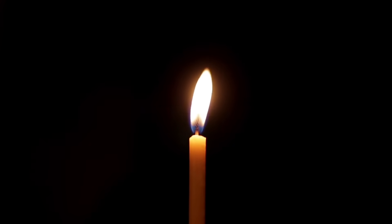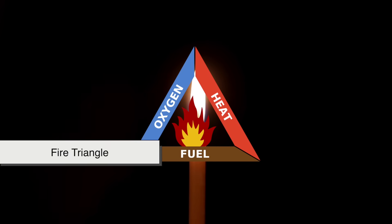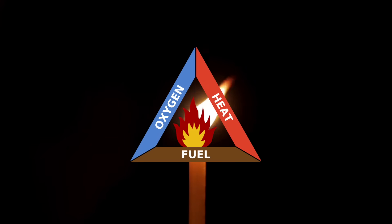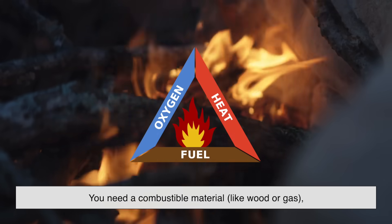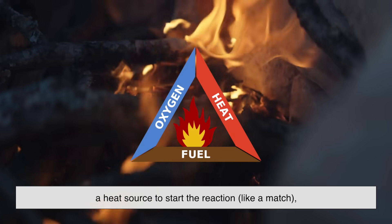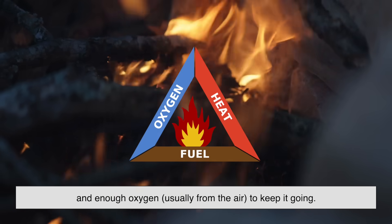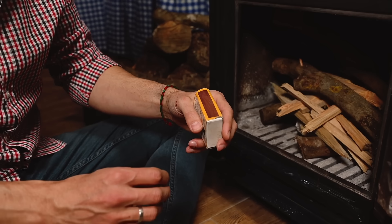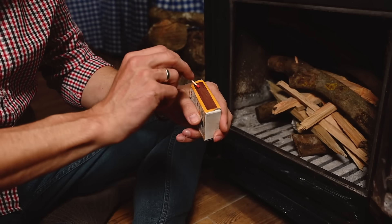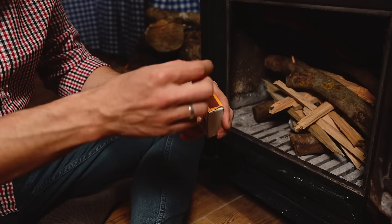Fire happens when three things come together in what scientists call the fire triangle: heat, fuel, and oxygen. You need a combustible material like wood or gas, a heat source to start the reaction like a match, and enough oxygen, usually from the air, to keep it going. Remove any one of these three and poof, no more fire.